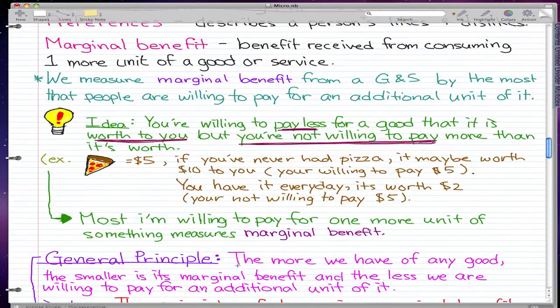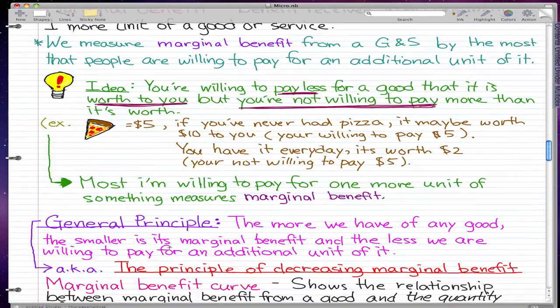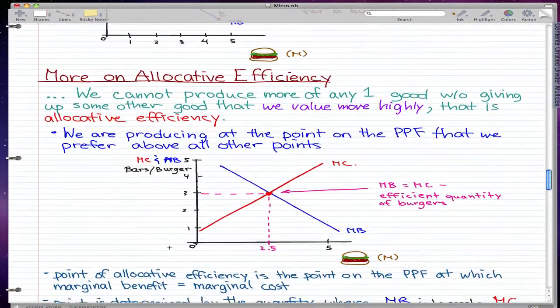So going back to our graph, we'll be producing at the optimal, we'll have allocative efficiency when we're producing at 2.5 million burgers. So at this point, we will be producing at efficient quantities of bars and burgers.